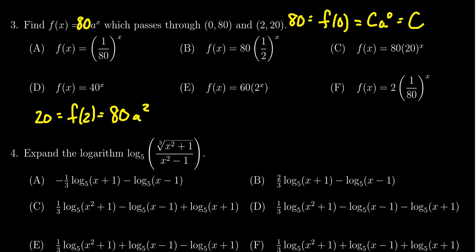So the next thing to do is divide both sides of the equation by 80. We're trying to solve for a in this expression. Of course, 20 over 80 is the same thing as 2 over 8. And 2 goes into 8 four times. So we end up with 1 fourth is equal to a squared.